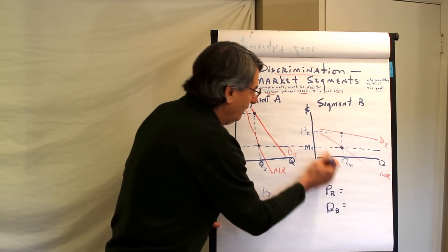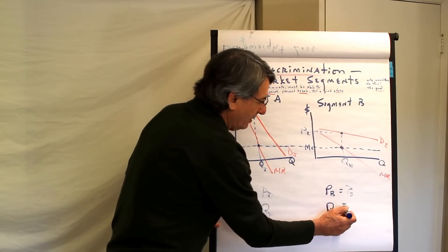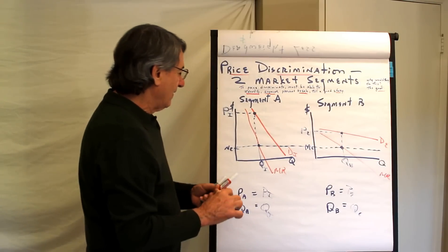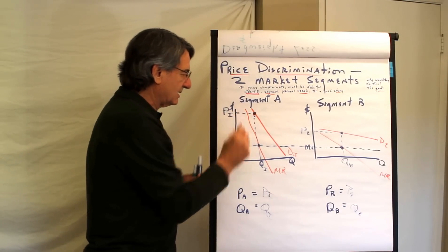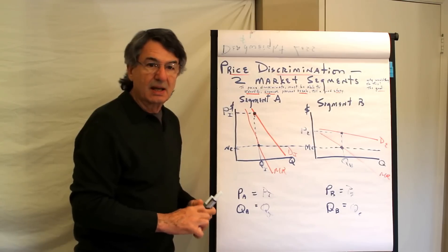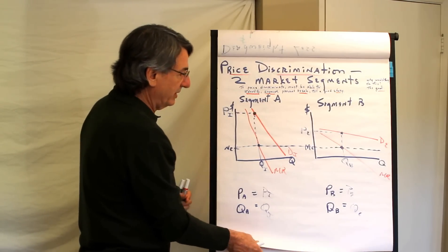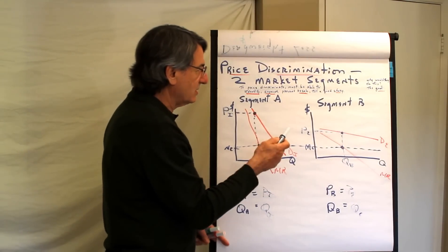The price for the vacation travelers is P elastic for elastic group and the quantity elastic. But we can see that, for sure, the group that is more inelastic in its demand will be charged at a higher price. And if the seller is able to pull this off, they can increase their total profits.